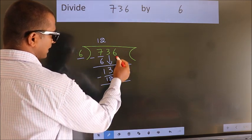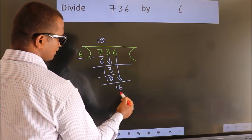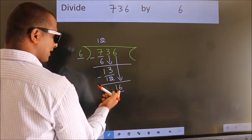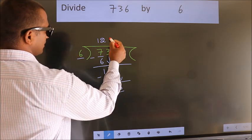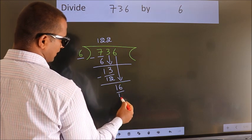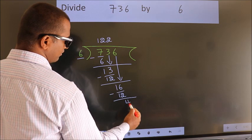After this, bring down the beside number. So 6 down. So 16. A number close to 16 in 6 table is 6 2s are 12. Now we subtract. We get 4.